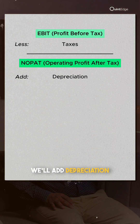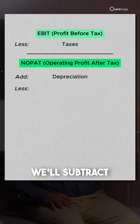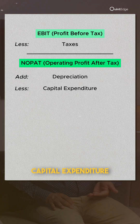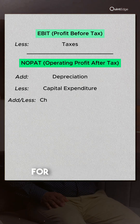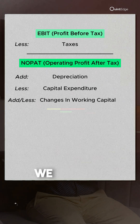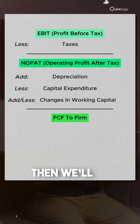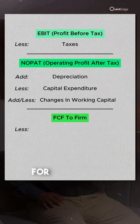To NOPAT, we make an adjustment for depreciation — we add depreciation back because it is a non-cash expense. We then subtract capital expenditure, and make an adjustment for cash inflows and outflows due to working capital. What remains is the free cash flow to firm (FCFF).